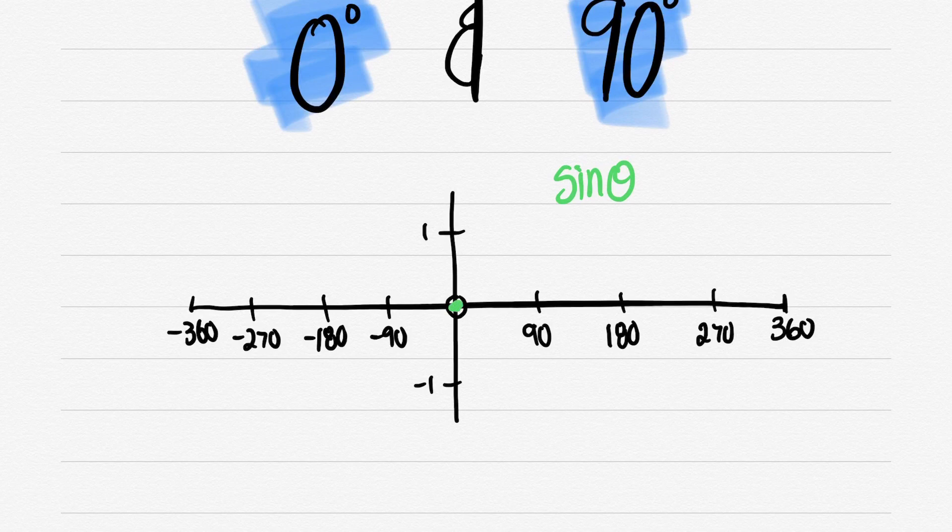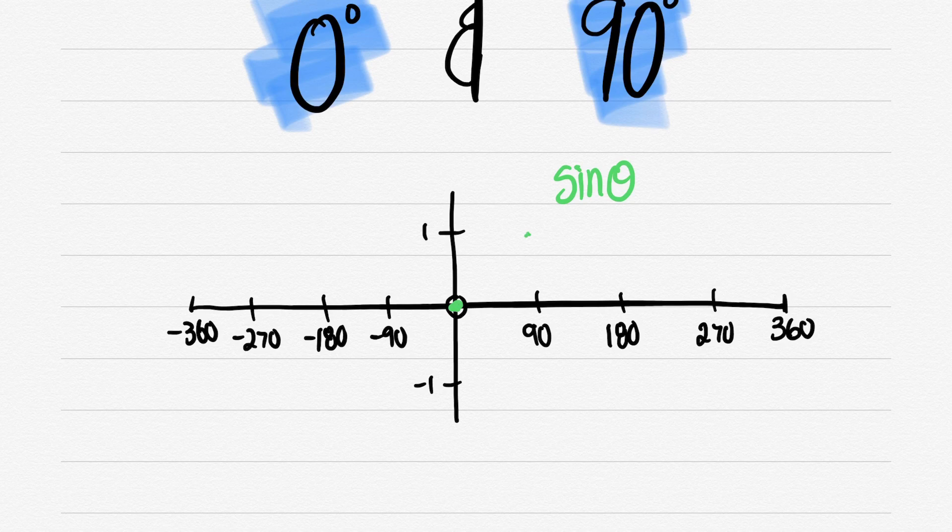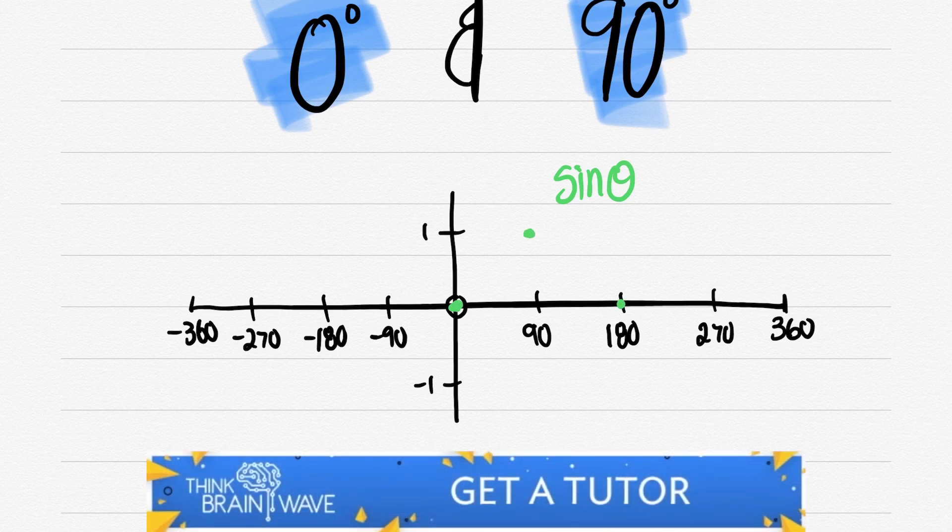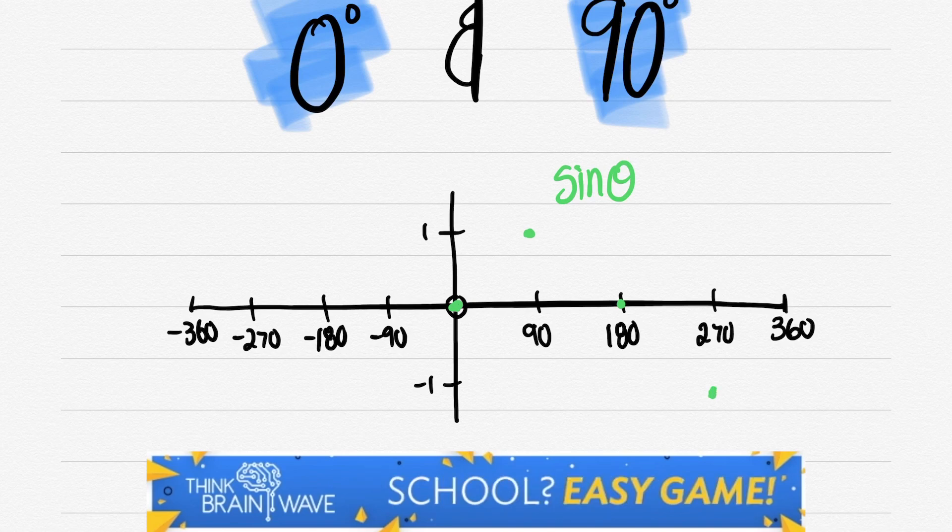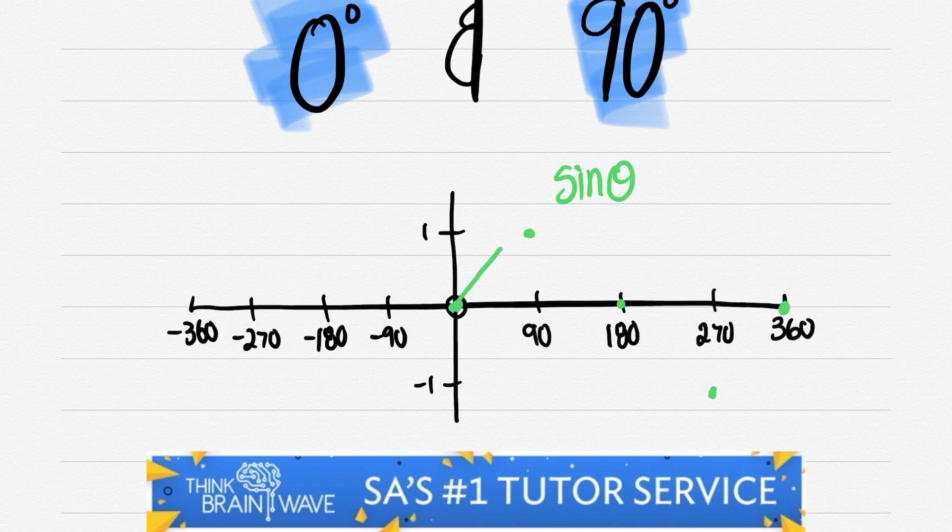Over here we've got 90°, 180°, 270°, 360°, and then -90°, -180°, -270°, -360°. So we've placed our first point at 0 because I know that sin 0° is 0, like we've just said.